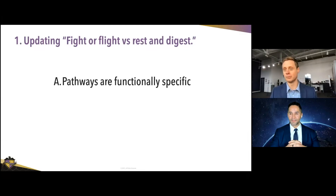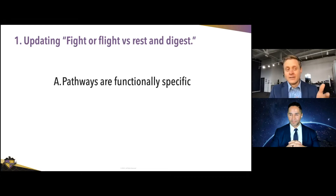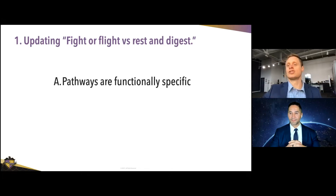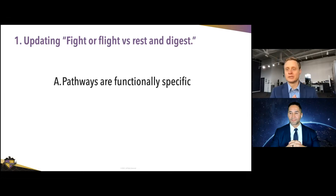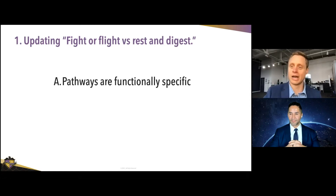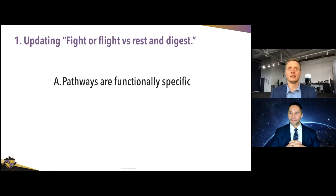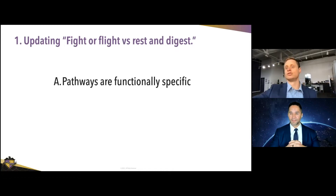The naming was not based on function, and that's really important. The reality is each one of these pathways — even different parasympathetic or sympathetic pathways — is functionally specific. I have specific nerves from my brainstem that stimulate my heart to slow it down, but on the same side a specific nerve goes to my salivary gland, and they may not be connected. They each have their own job.